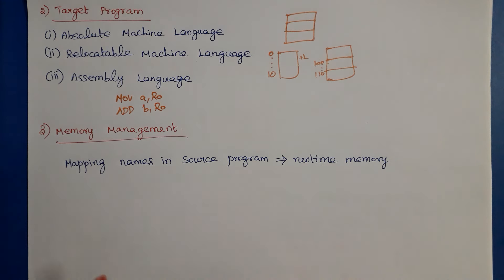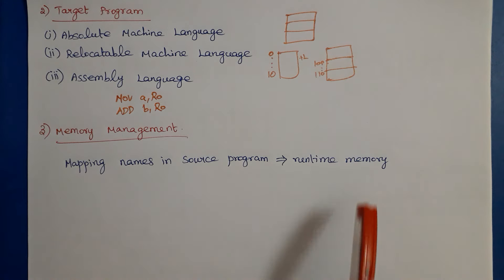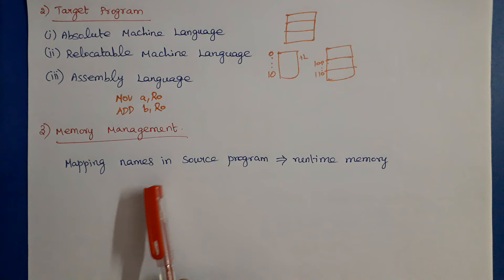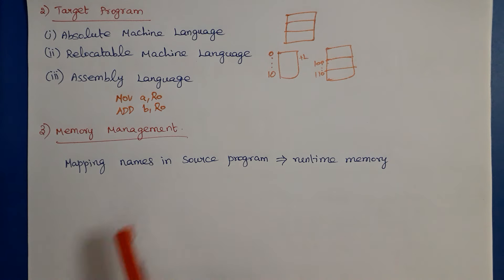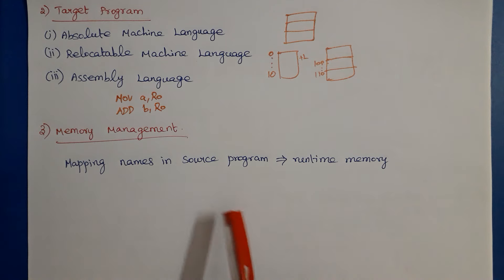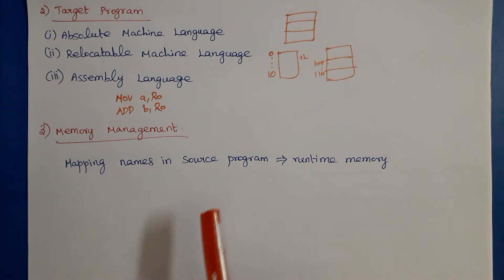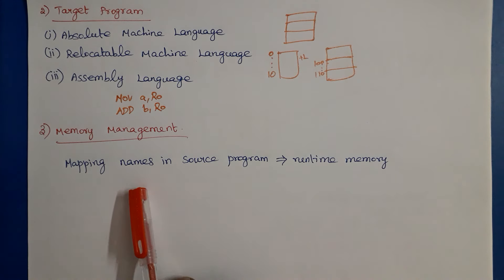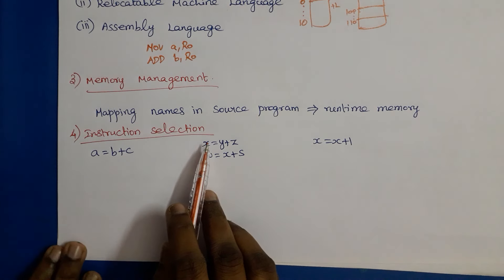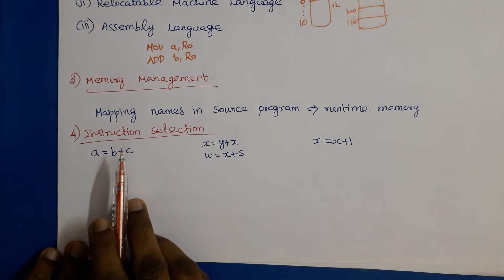The third issue is memory management. Mapping of names in the source program to runtime memory should also be done. This is done with the help of symbol table information, because whenever declaration statements are seen in a source program, they are entered into the symbol table along with the name, type, and offset address. With this information we can find the relative addresses of names and map them to the corresponding runtime memory addresses.